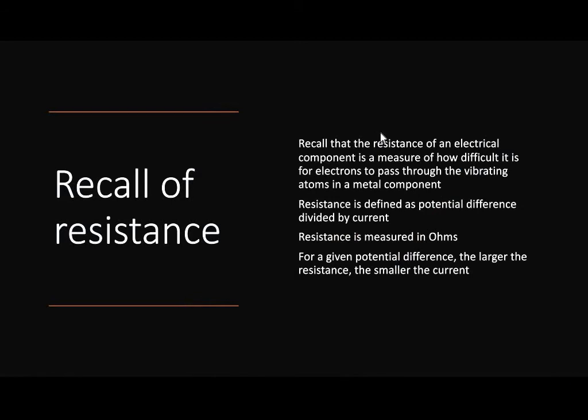So just a quick recap of what we mean by resistance. You should remember that resistance of an electrical component is a measure of how difficult it is for the electrons to pass through the atoms that are vibrating in a metal component. If we think about a filament in a light bulb, which is made of metal, as the current passes through it transfers energy to that filament. The atoms in that filament start to vibrate faster and therefore cause resistance, stopping the electrons flowing, and that heats up the bulb and increases the resistance.